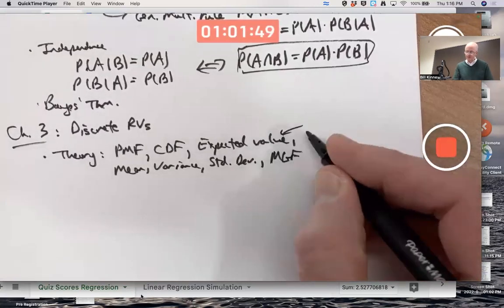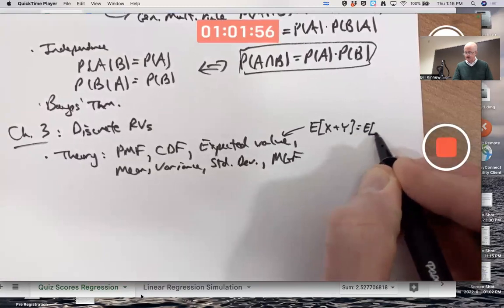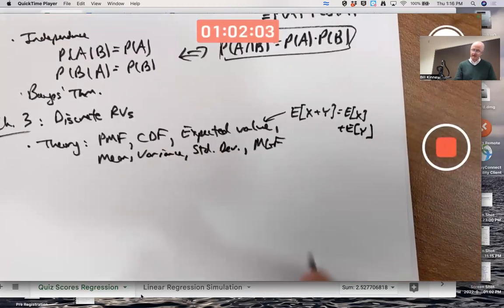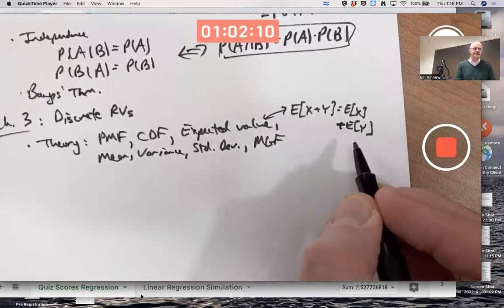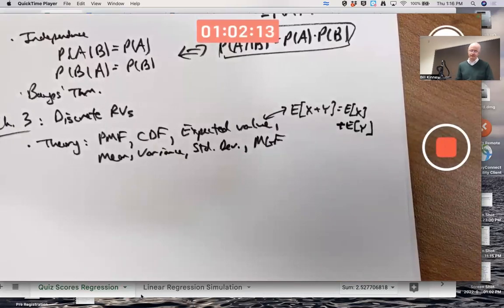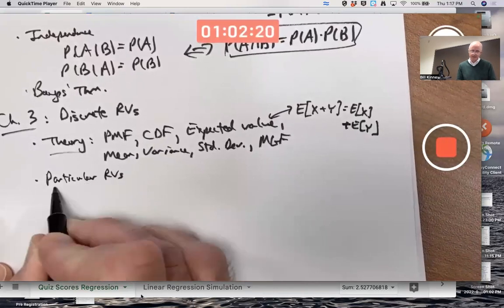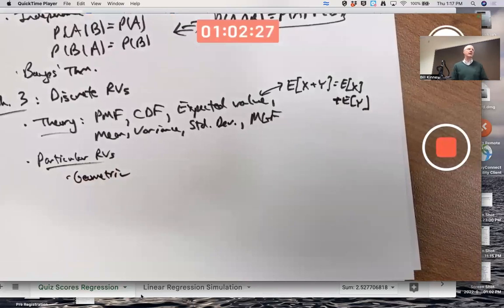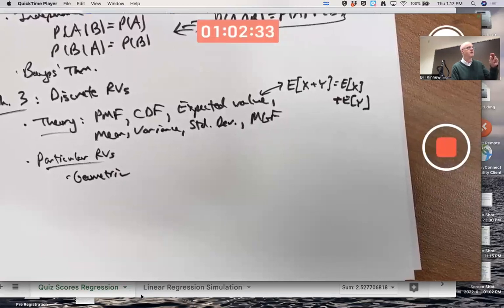That's all part of the theory from the beginning of chapter three. With the expected values, you also have properties of expected values like linearity, which, again, is this property here is, it sounds very reasonable, but it's actually difficult to prove. It's probably the most reasonable sounding property when you think about it with examples that there is, that's not very easy to prove that I can think of. Then you've got particular random variables. We started with geometric. Where X counts the number of trials until the first success. It's a Bernoulli trial situation where you either have success or failure. On any given trial, the probability of success is constant. Trials are independent.